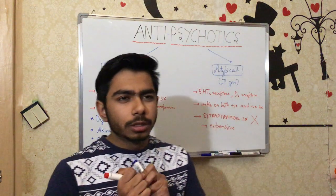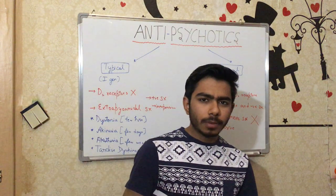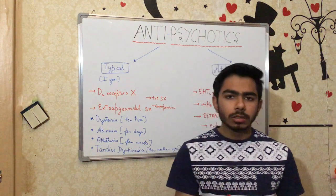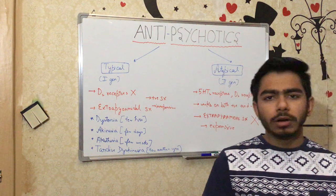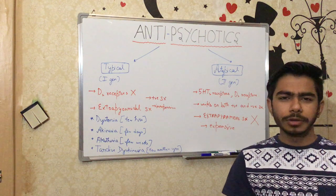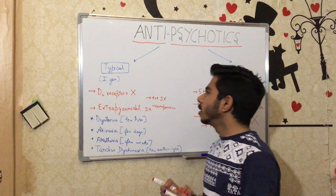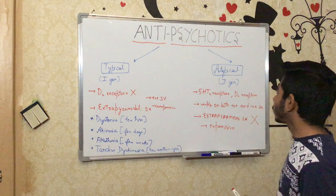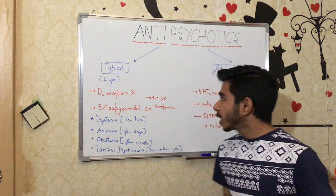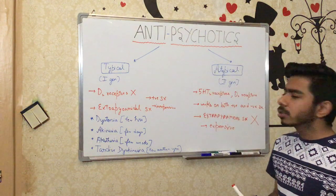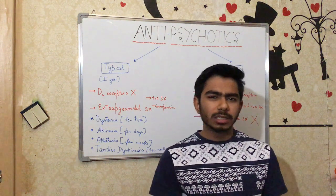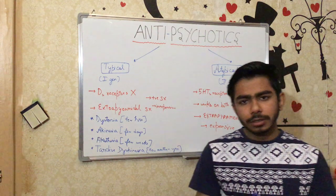Typical antipsychotics, as they bind to the D2 dopamine receptors, may also cause anticholinergic effects like dry mouth or fecal and urinary retention. In atypical antipsychotic drugs, they can also cause anticholinergic effects, as well as some antihistamine or anti-adrenergic effects too.